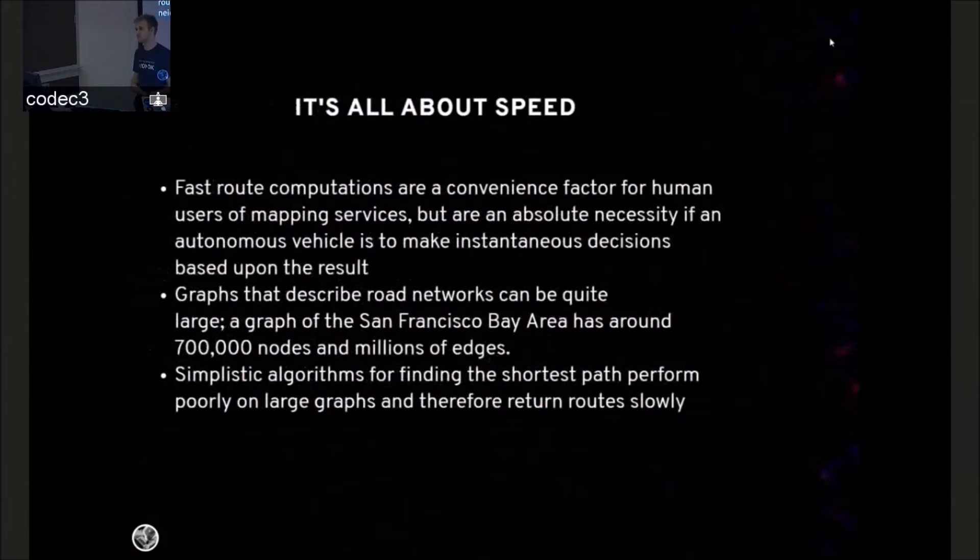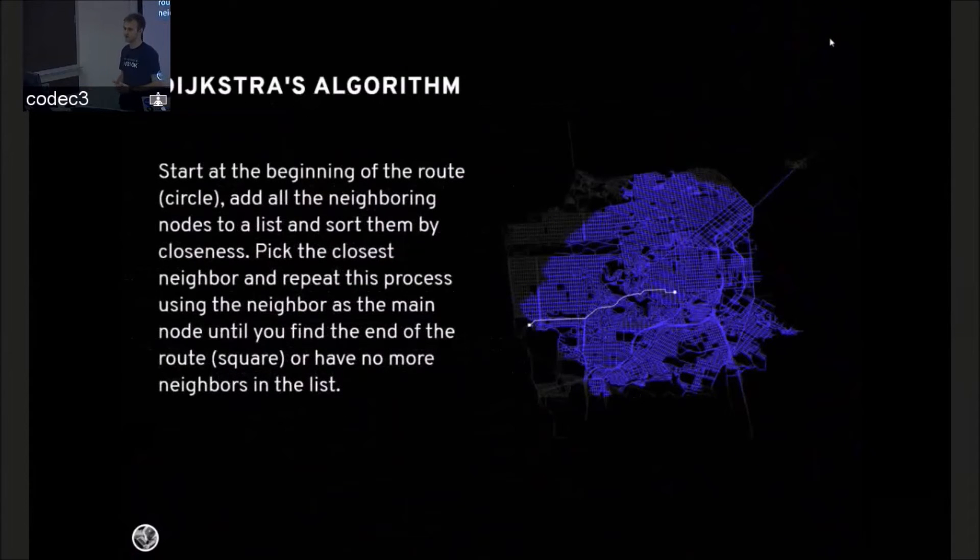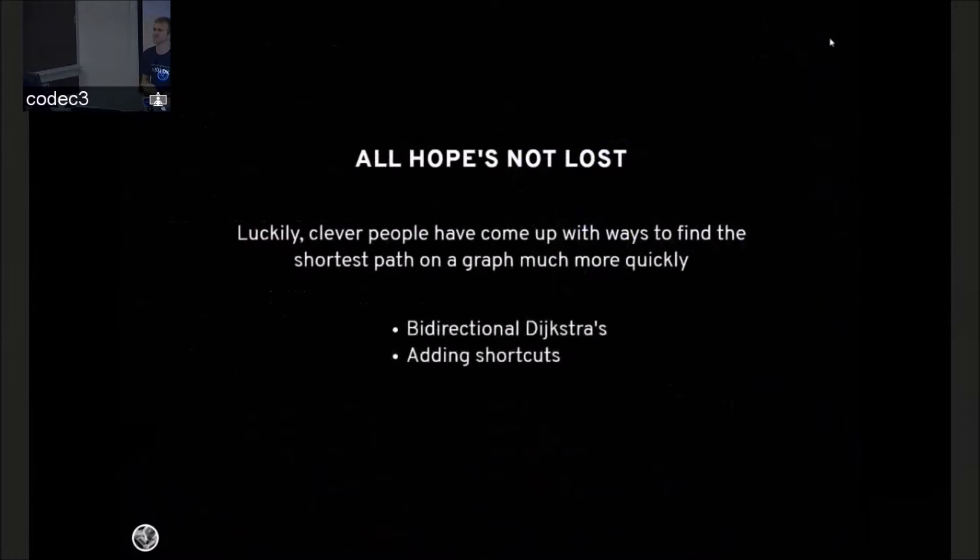Let's take a look at the most simple shortest path algorithm that exists, and it's Dijkstra's algorithm. The implementation details are roughly covered up there, but what you really need to know is that you start at the start, and you search outward in a circle, and it's a lot of wasted space. To travel across San Francisco, we have to look at every road in San Francisco.